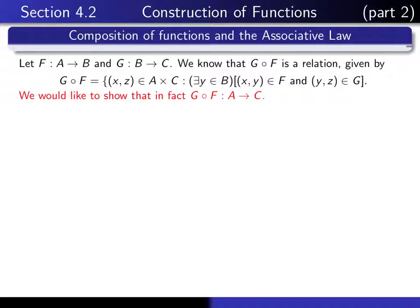Suppose we have two functions: one function from set A to set B, and another one from set B to set C. We've talked about the composition F composed with G. It's always a relation from A to C, defined to be the set of ordered pairs (X, Z) in A cross C, such that there exists a Y in B such that (X, Y) is in F and (Y, Z) is in G.